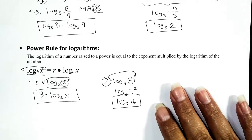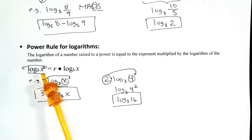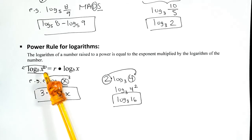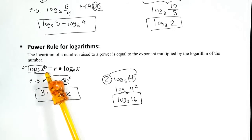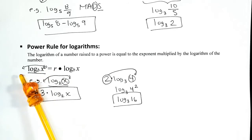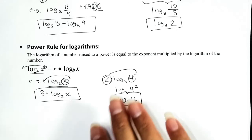The power rule for logarithms says: if your argument is being raised to some power, you can tone it down — bring the exponent down and multiply it by the leftover logarithm. I'll remind you more when we use it.